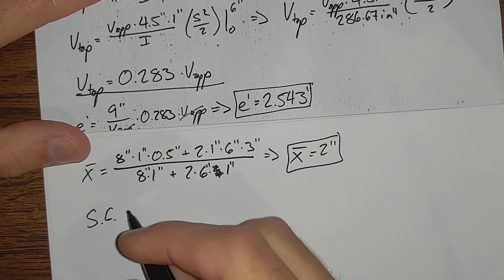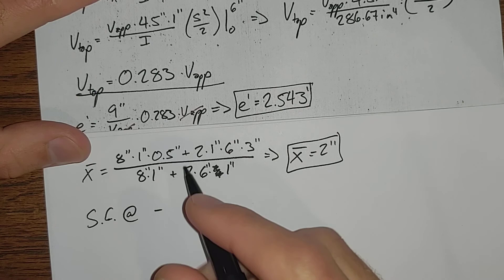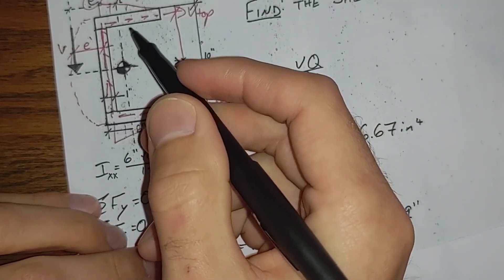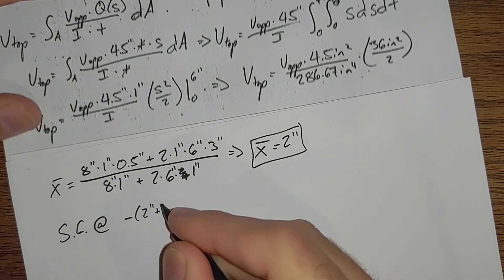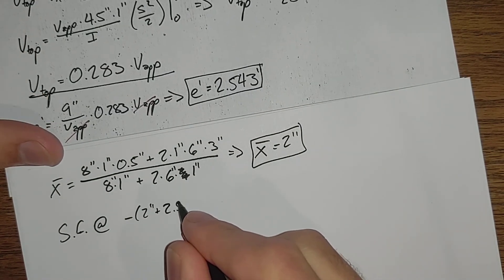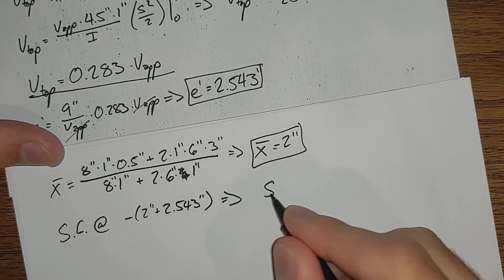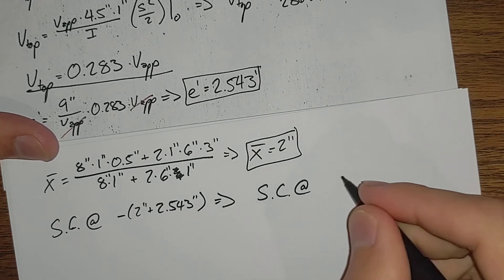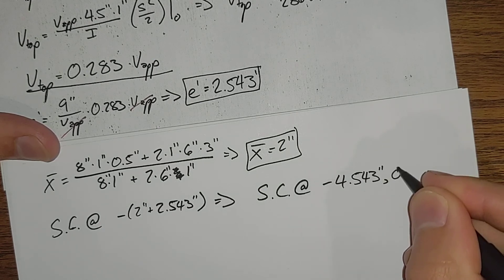Shear center at negative, because we're to the left of our coordinate system here, negative 2 inches plus 2.543 inches. So the shear center is at negative 4.543 inches, 0 inches.